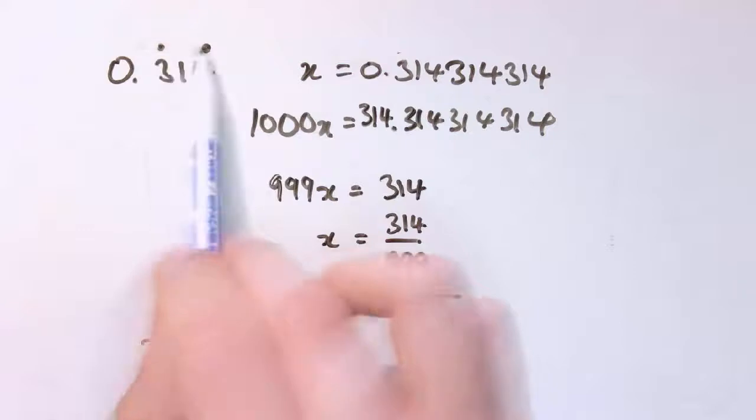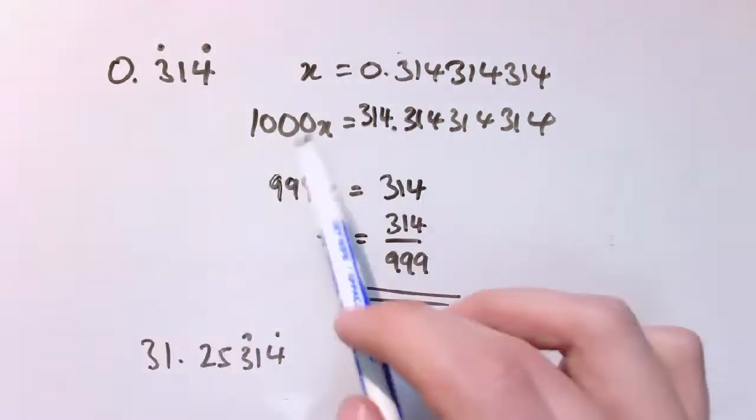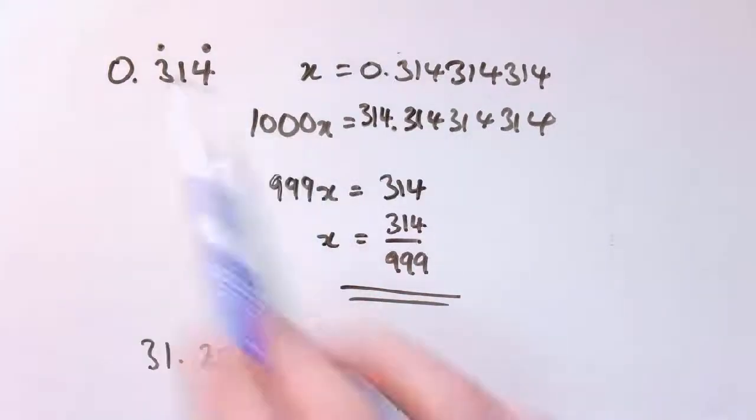In principle that's how it works. However many digits there are in the recurring pattern, we add another factor of 10 in here. One was 10, two was 100, three was 1000. If it was four you do 10,000, five you do 100,000, six a million, etc., and just apply that method.